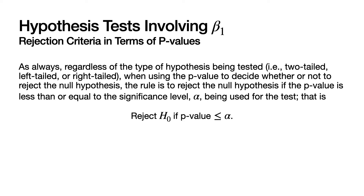How do we use p-values in deciding whether to reject the null hypothesis? As always, regardless of whether it's a two-tailed, left-tailed, or right-tailed test, the rule is to reject the null hypothesis if the p-value is less than or equal to the significance level alpha being used for the test.